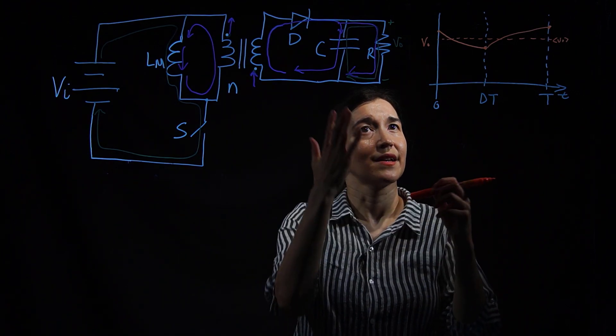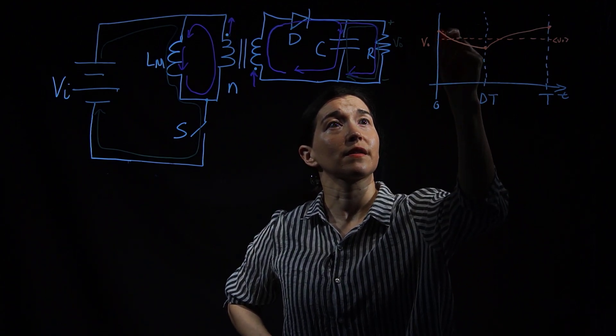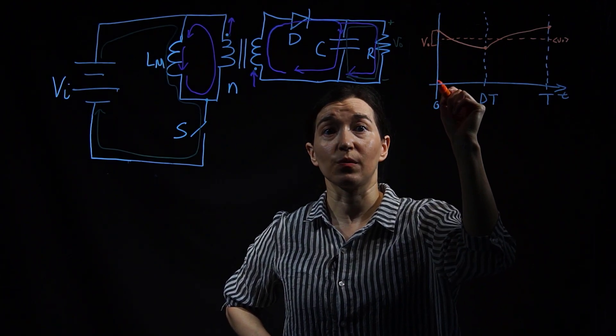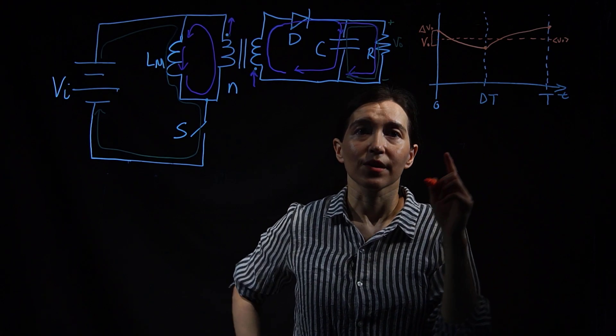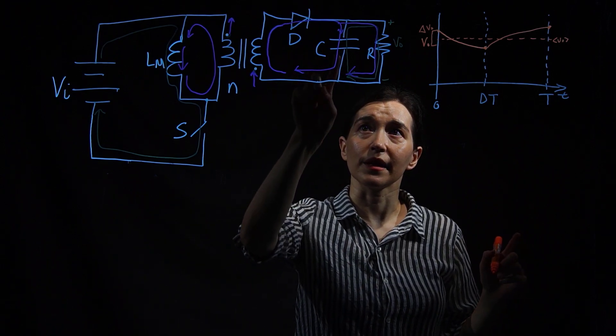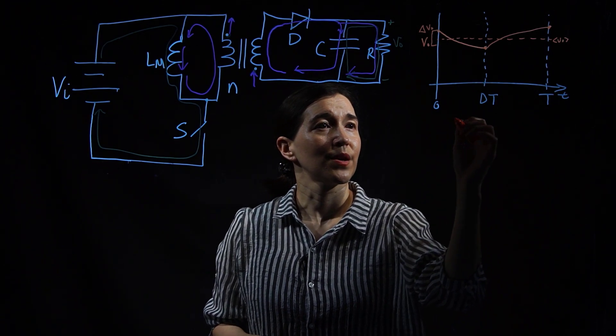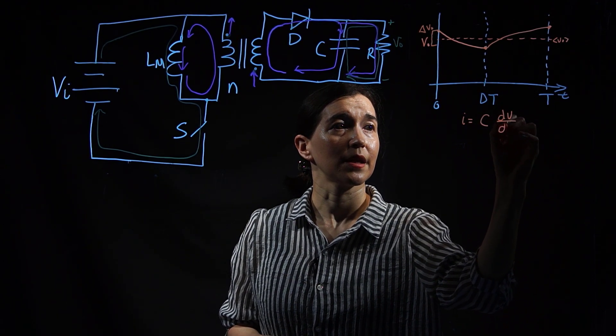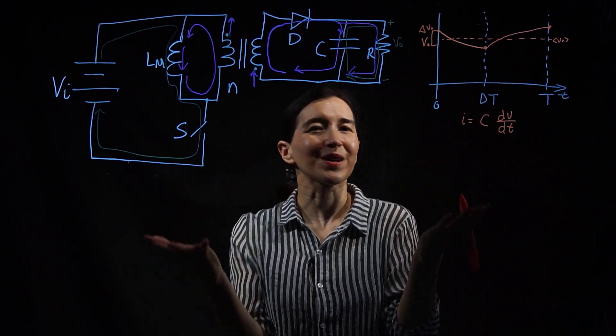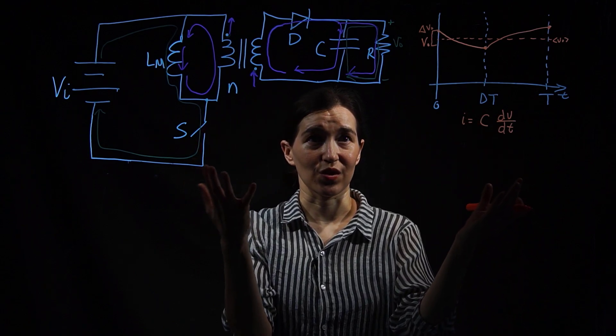To calculate the ripple that we're going to see here, we want to see this difference from the maximum to the minimum. We're calling that delta V out. To calculate that we need to look at the capacitor here and start with the capacitor equation. So I equals C dV dt. Always start with our favorite basic differential equations, and now we're going to put it into discrete time.